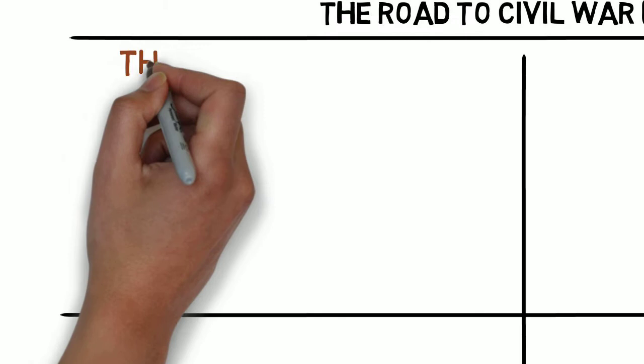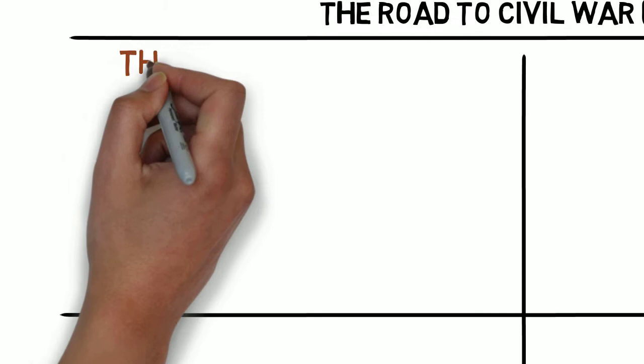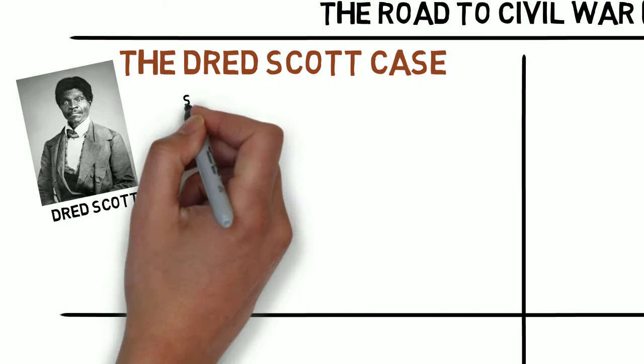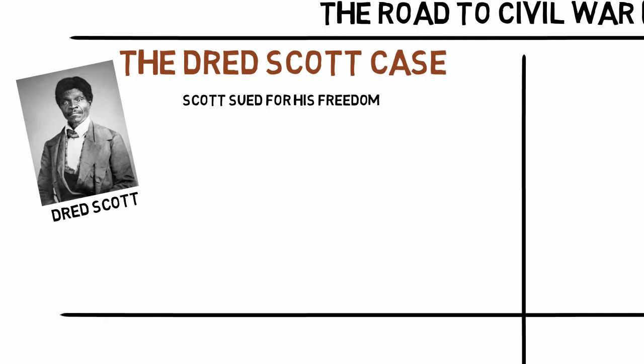Next on the list was one of the worst Supreme Court decisions in American history: the Dred Scott decision. Dred Scott was a slave from Missouri who was brought to the free state of Illinois by his owner. Because he was brought to a state that did not allow slavery, Dred Scott sued for his freedom, and the case went all the way to the Supreme Court.